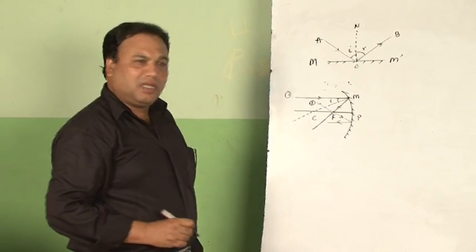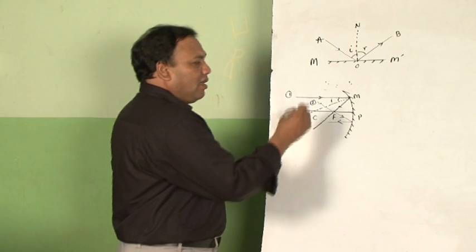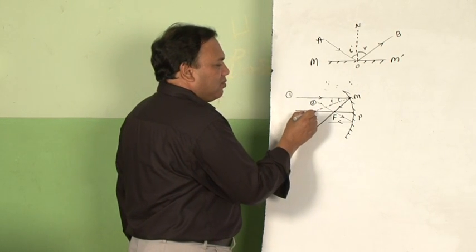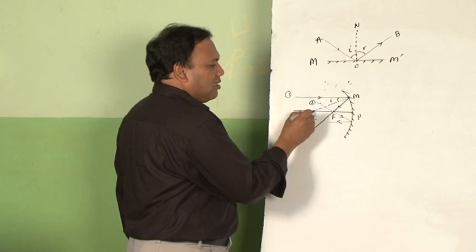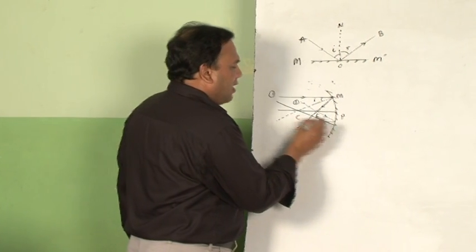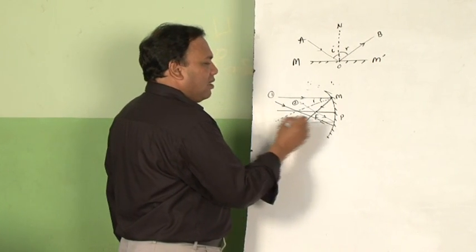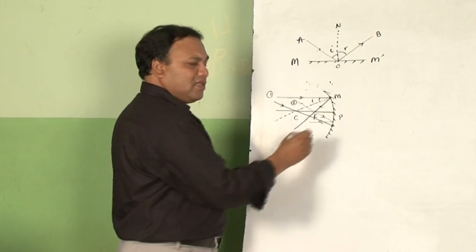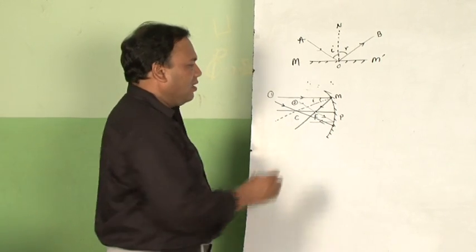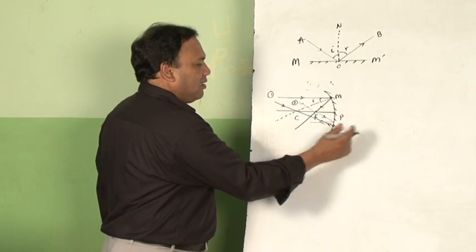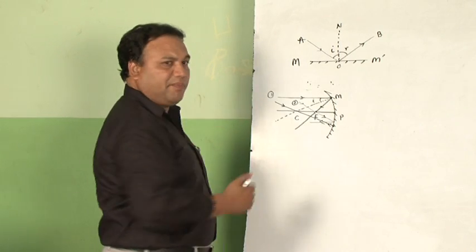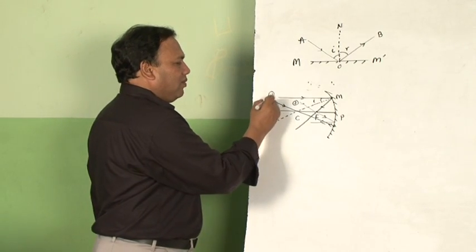The third rule is: if a ray of light passes through the center of curvature and falls on the mirror, it gets reflected back and retraces the same path.